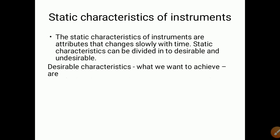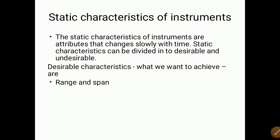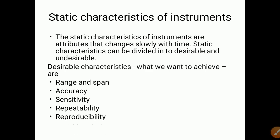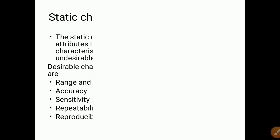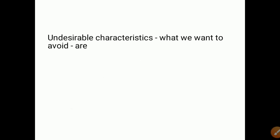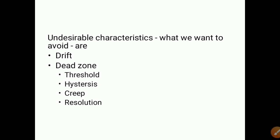The desirable characteristics — the characteristics that we want to achieve — are range and span, accuracy, sensitivity, repeatability, and reproducibility. The undesirable characteristics — the ones we don't want — are drift, dead zone, threshold, hysteresis, creep, resolution, and static error. We do not want error in any particular measurement.